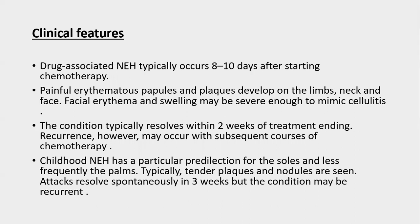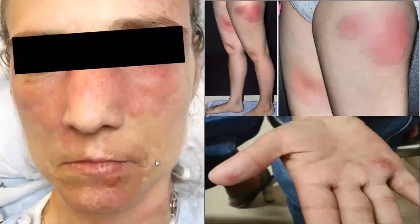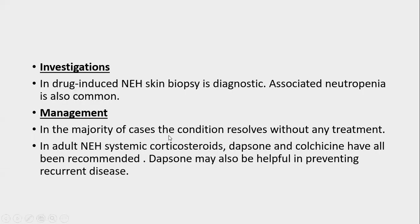Childhood NEH has a particular predisposition to the soles and, less often, palms. Typical tender plaques and nodules are seen. Attacks resolve spontaneously in three weeks but the condition is recurrent, with erythematous nodules and plaques occurring on limbs, trunk, and face. Skin biopsy shows damage to eccrine ducts with dense neutrophilic infiltrate; associated neutropenia is also common. Majority of cases resolve spontaneously by stopping medications. In adult NEH, systemic corticosteroids, dapsone, and colchicine are prescribed; dapsone is helpful in preventing recurrence.